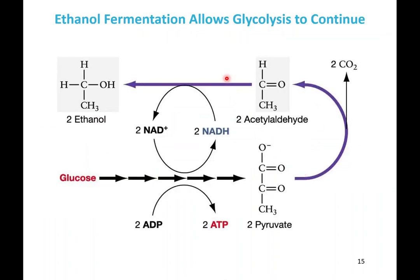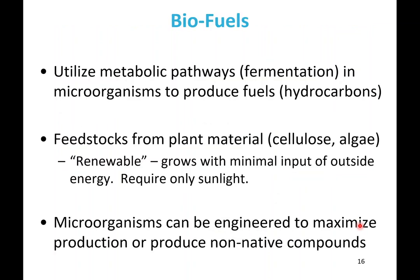Ethanol fermentation allows glycolysis to continue: glycolysis produces ATP and converts NAD+ to NADH; then pyruvate goes to acetaldehyde and acetaldehyde to ethanol, recycling NADH back to NAD+. This allows glycolysis to keep occurring and ATP production to continue.